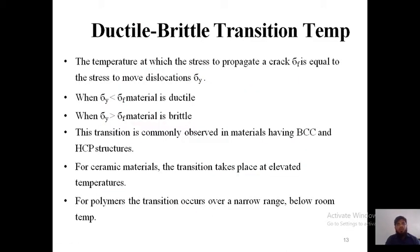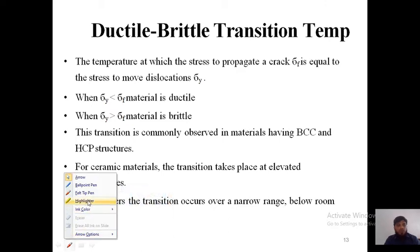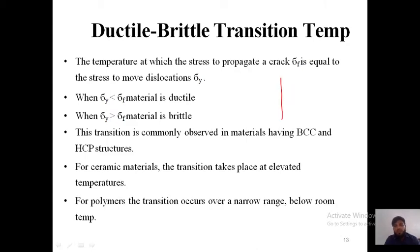Let us see what is this ductile to brittle transition and how it happens. The temperature at which the stress to propagate the crack — sigma f — equals the stress to move the dislocation, which is the yield stress. For a ductile material, yield stress is much less than fracture stress. In a stress-strain diagram, this is my yield point and this is my fracture point. The distance between them: this is sigma y and this is sigma fracture.